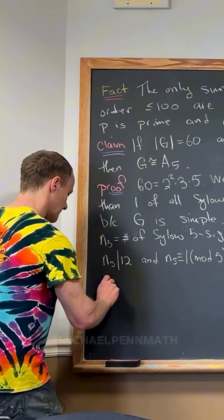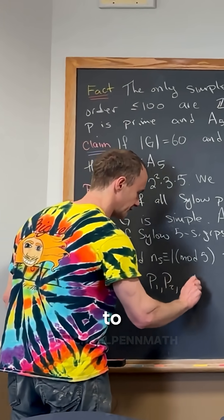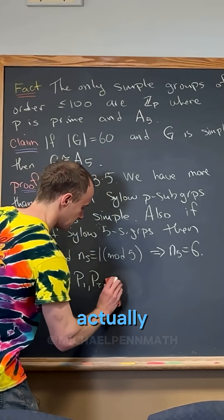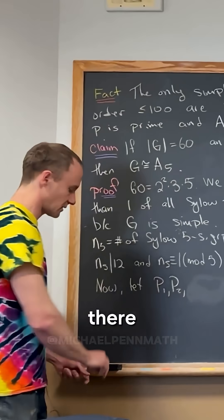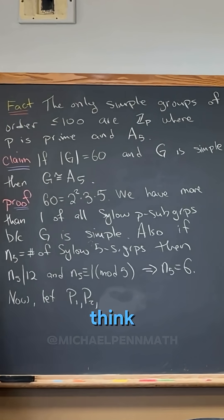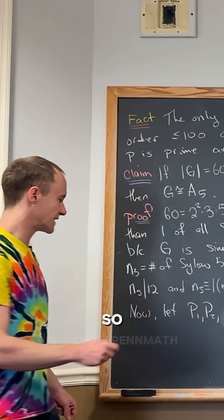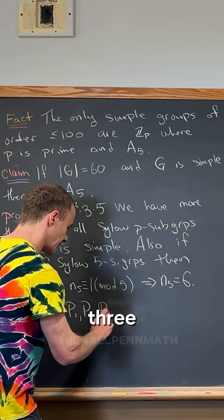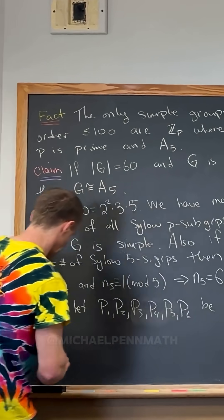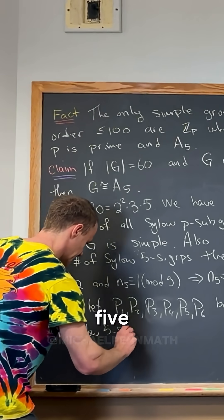So now, let P1, P2, up to P6 be the Sylow 5-subgroups. If the only possibility is 6, can we just say it actually is 6? Yes — it is 6. There are 6 of them. So we've got P1, P2, P3, P4, P5, P6, the Sylow 5-subgroups.